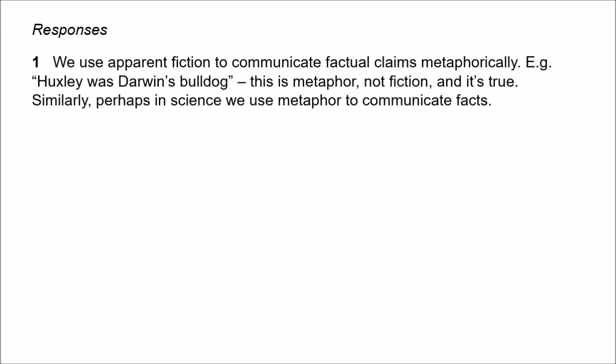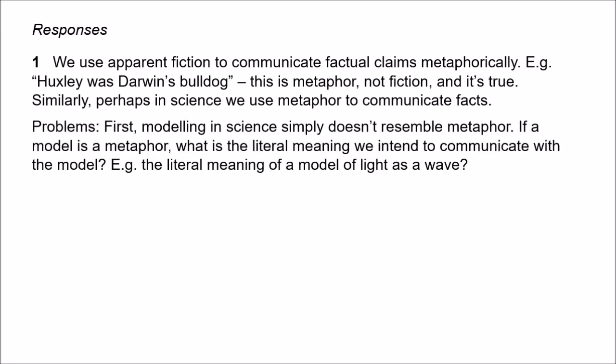It might be argued that in science, as in the rest of life, we use metaphorical claims to communicate facts. The seeming fictions in science are metaphors — they're not really false. The problem with this kind of move is that modelling doesn't really seem to be comparable to metaphor. When we model light as a wave, are we saying that light is only metaphorically a wave? Or when we model the relations between species in a particular ecosystem, are we saying that the species are metaphorically predators and prey? If so, what exactly is the literal meaning we're trying to communicate? With the metaphor of Huxley as Darwin's bulldog, we can specify the literal meaning — we're saying something about Huxley's personality and behaviour, not really talking about his species. So we can specify the literal meaning.